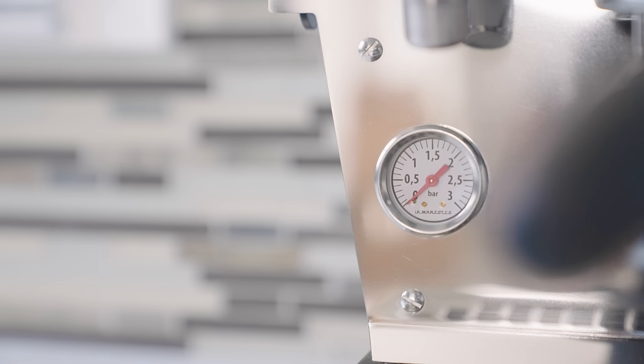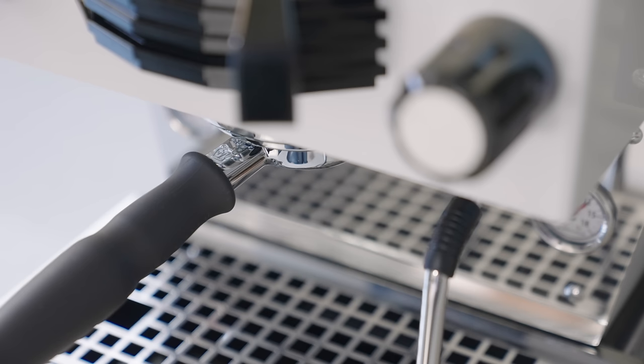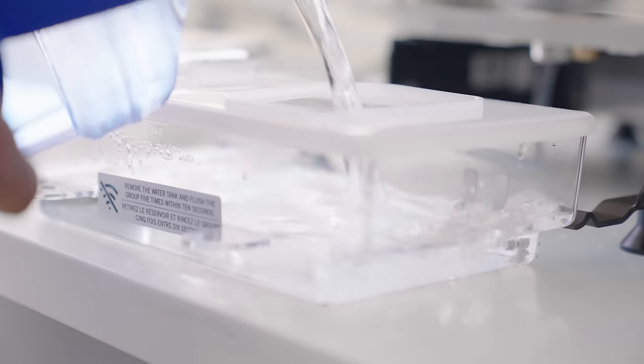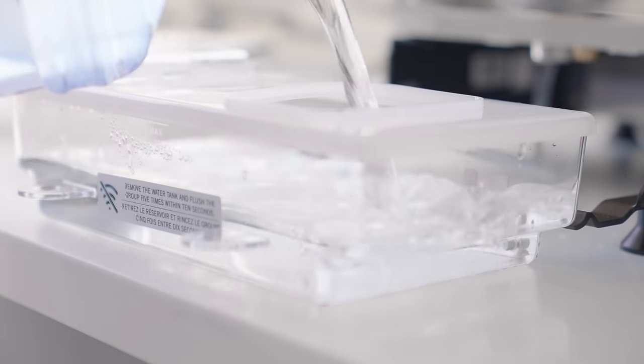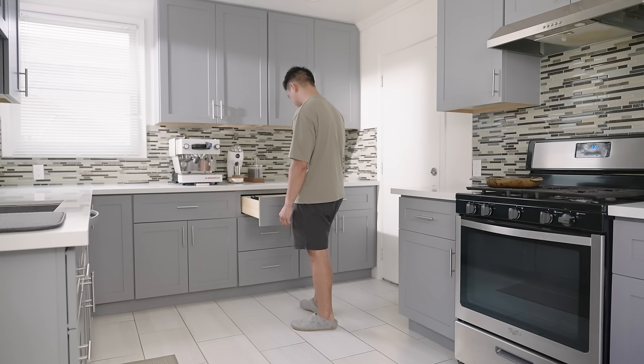Last but not least, we have the La Marzocco Linea Mini in white. There are plenty of options when it comes to espresso machines. The main driver behind the purchase of this particular one was that I wanted a front load water reservoir. In terms of use and workflow, I figured it would be easier to load water from the front rather than overhead. Aesthetically, I also like the way this machine looks on the counter with its minimal white and timeless design.